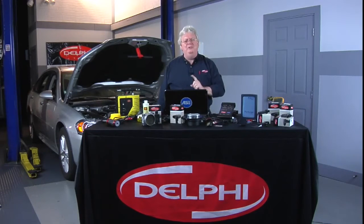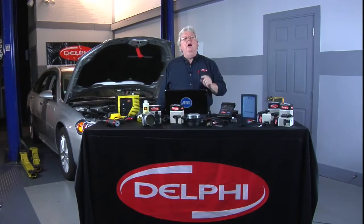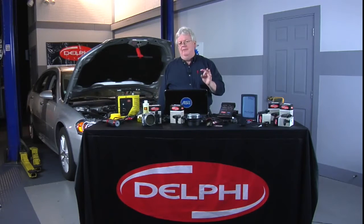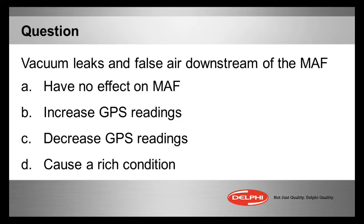Let's ask you folks a question and see where you stand. Talking about vacuum leaks — false air downstream from the mass air flow — what will happen? A, have no effect on the mass air flow. B, increase the grams per second GPS readings. C, decrease the GPS readings. Or D, cause a rich condition. Make your selection now.